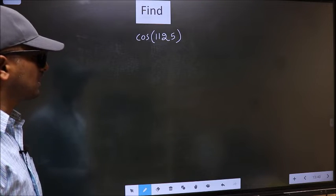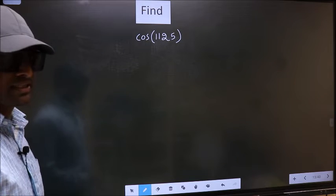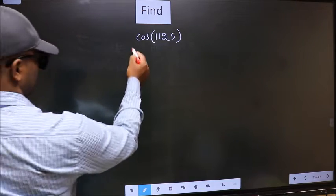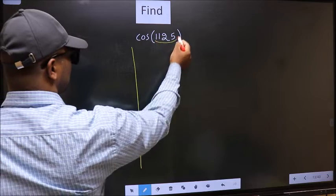Find cos(1125°). To find this, we should follow this method. See, here we have 1125.